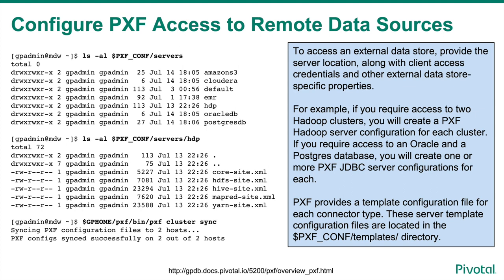To access an external data store, provide the server location along with client access credentials and other external data store specific properties. The information you provide in a server configuration is connector specific. You will configure a server definition for each external data store that Greenplum database users need to access. For example, if you require access to two Hadoop clusters, you will create a PXF Hadoop server configuration for each. If you require access to an Oracle or Postgres database, you will create one or more PXF JDBC connector configurations for each database.